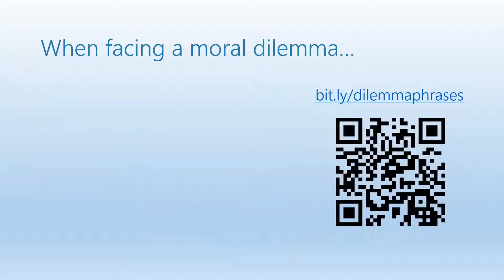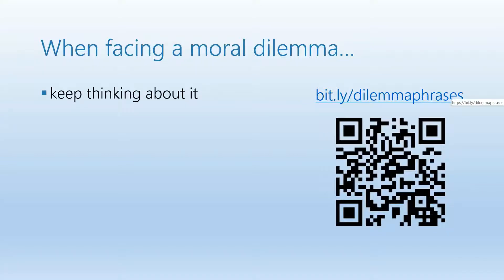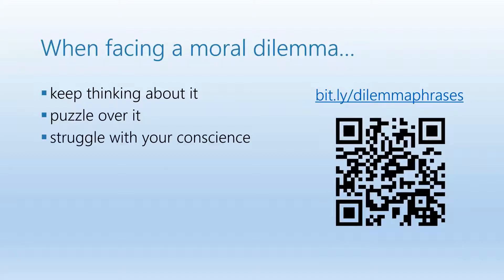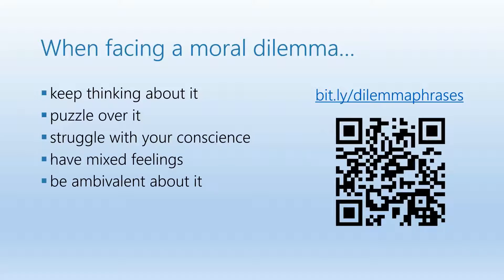So what's going on in our heads and our hearts when facing a moral dilemma? Probably the following things: first of all, you keep thinking about it — there's nothing else going on in your head; you just keep thinking about what you should do. To 'puzzle over it' means that you spend a lot of time thinking about the right solution. You will probably struggle with your conscience, as it involves transgressing a moral principle either way, and you will probably have mixed feelings — feel ambivalent about it and be at the end of your tether.